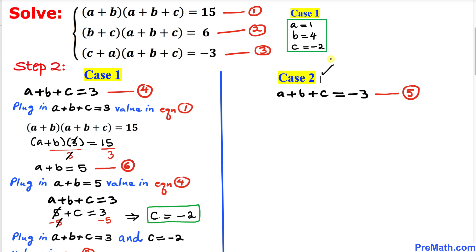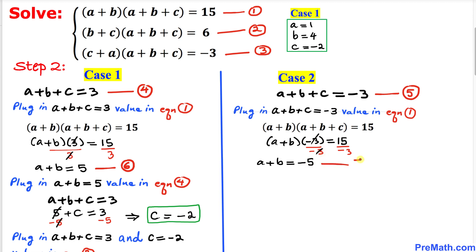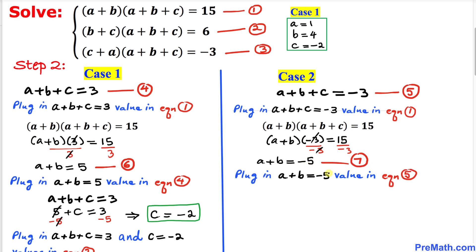Now let's take care of Case 2. We plug a+b+c = -3 into equation 1: (a+b)(-3) = 15. Dividing both sides by -3, the -3s cancel, giving us a+b = -5. Let's call this equation 7.